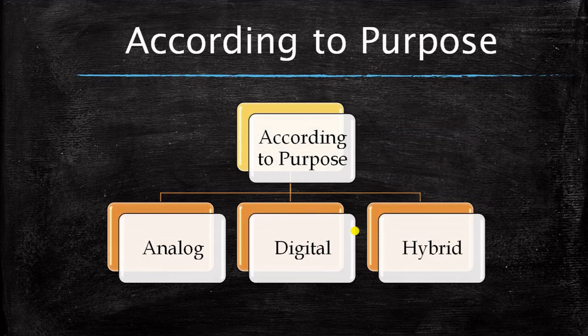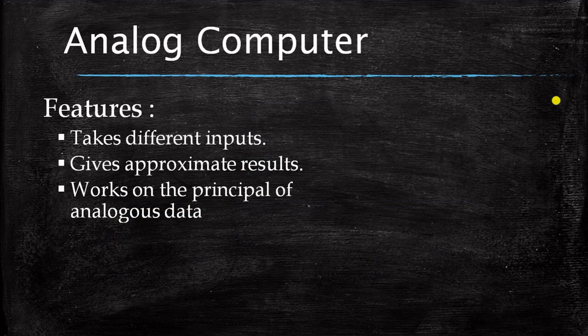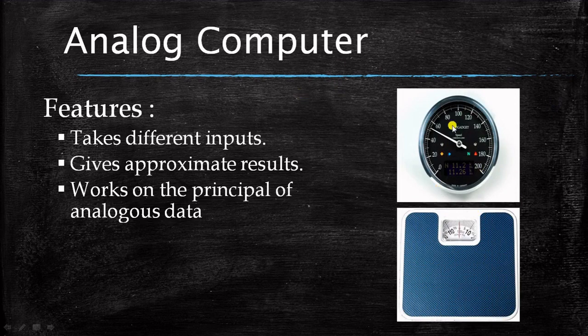According to purpose, computers are categorized into three sections: analog computers, digital computers, and hybrid computers. Analog computers take different inputs, give approximate results, and work on the principle of analog data. Analog data is not exact — for example, a speedometer in motorcycles or cars, and a wave machine. When these things are working, we don't see an exact result; they give us approximate results nearby the correct results.